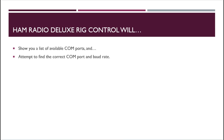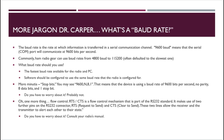Ham Radio Deluxe rig control will show you a list of available COM ports. You can set it to automatically search for the right COM port and baud rate. In the connection settings, rather than setting the COM port or baud rate manually, you can set it to automated to search and find it. Baud rate is the speed at which data is communicated over a serial communications channel — 9600 baud means 9600 bits per second.